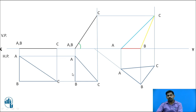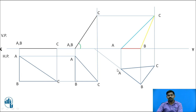The total problem is as follows: a 30-60 set square is given and the top view appears as an isosceles triangle. From this isosceles triangle, you have to find the inclination with the HP. In the third stage, the inclination with the VP is drawn in the HP. Remember, if the inclination with the VP is given, you have to draw it in the HP. In a similar way, the problem is carried out.